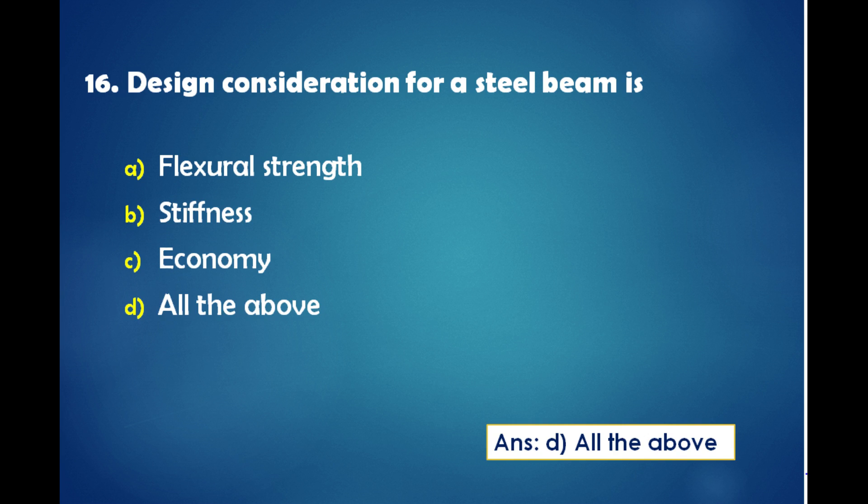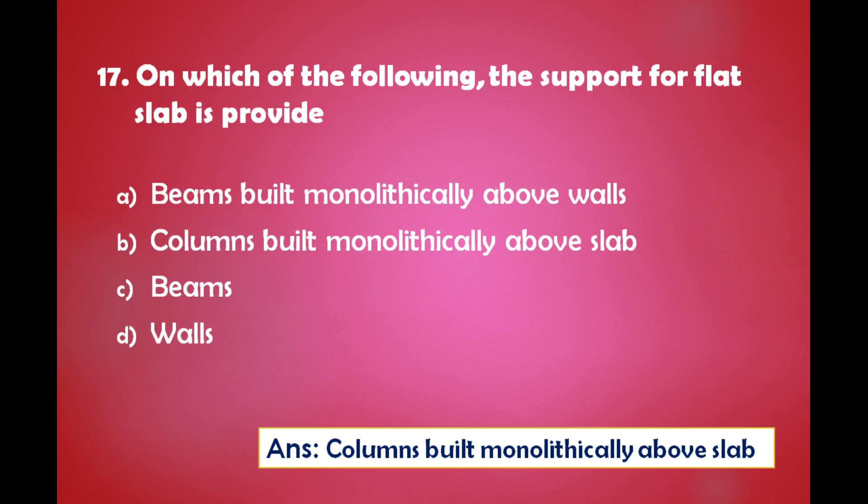Design consideration for a steel beam is: A) Flexural strength, B) Stiffness, C) Economy, D) All of the above. The answer is: the design consideration for a steel beam will be all of the above three.